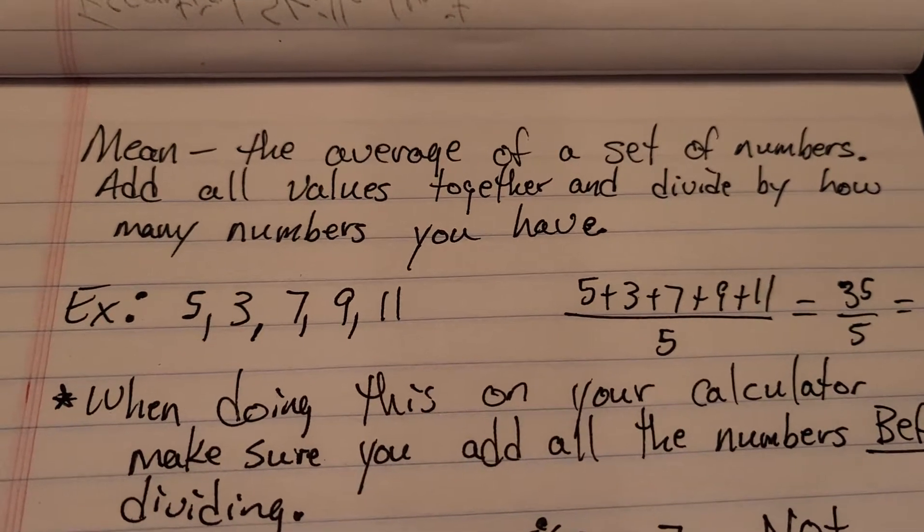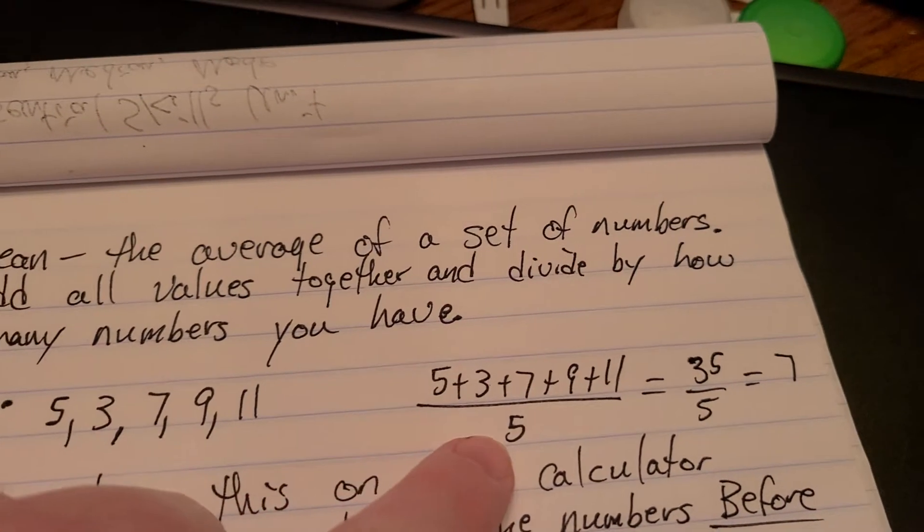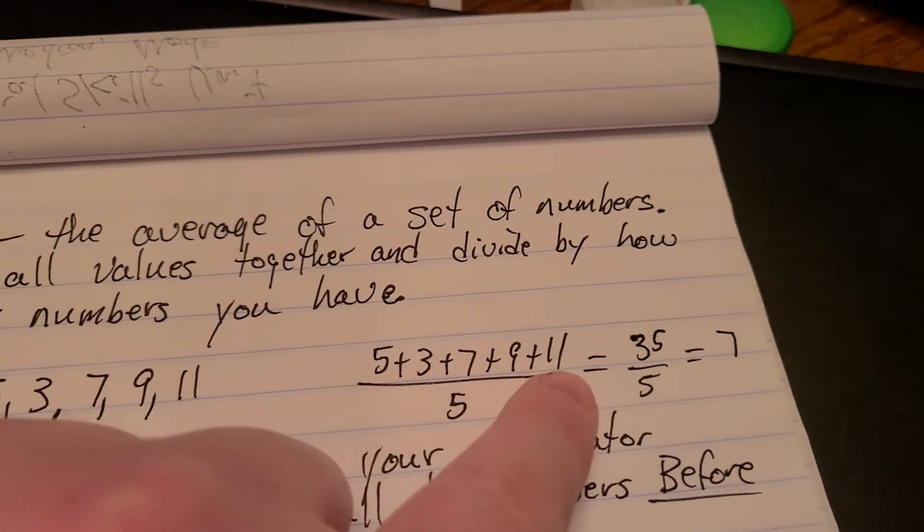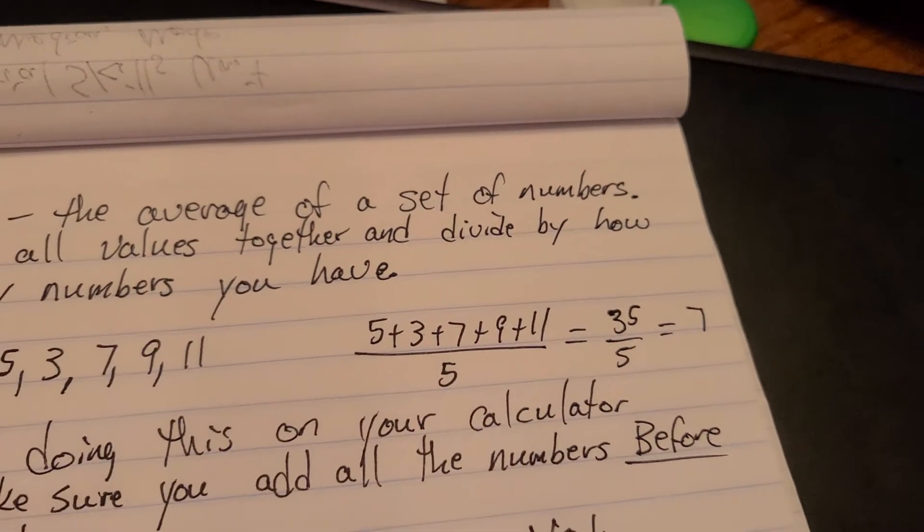You're given these five numbers: 5, 3, 7, 9, and 11. You add them all up and then you divide by how many numbers there are. So when you add those five numbers up, you get 35 and then 35 divided by 5 is 7. So your average is 7.